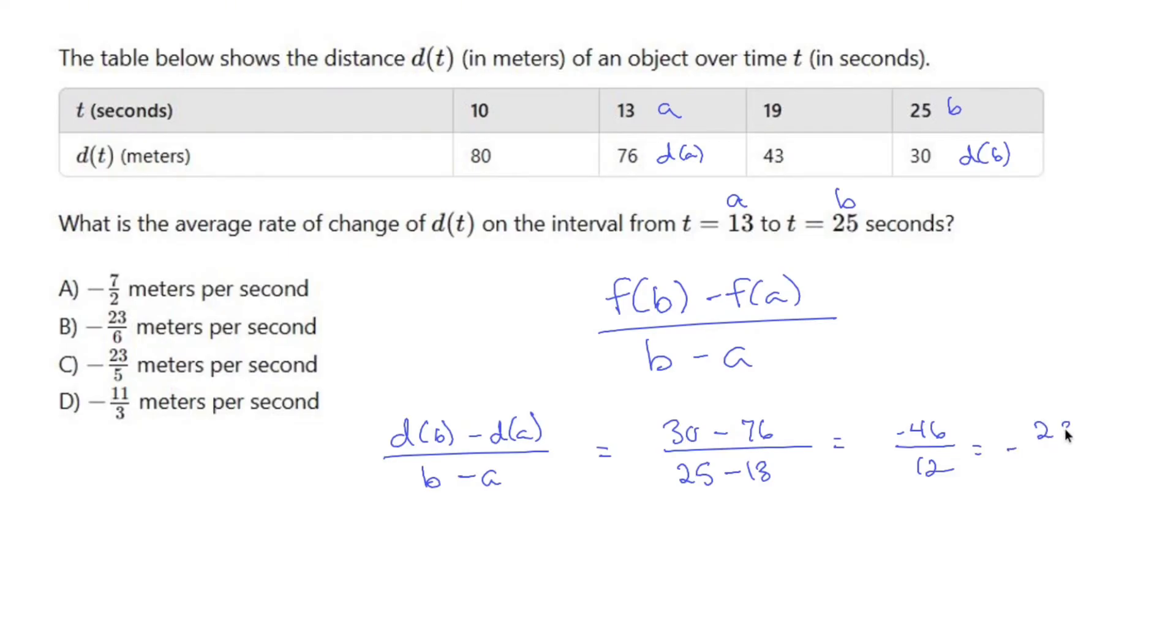So negative 23 over 6. And since this is a rate of change, it's going to be meters per second. So negative 23 over 6 meters per second, which seems to match up with b.